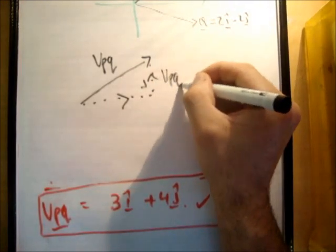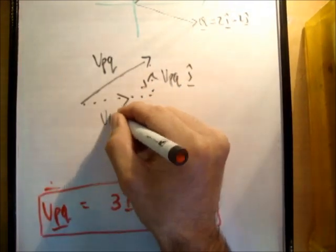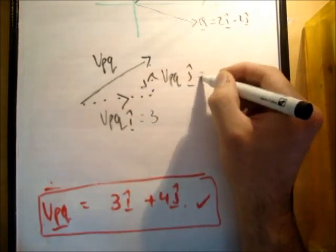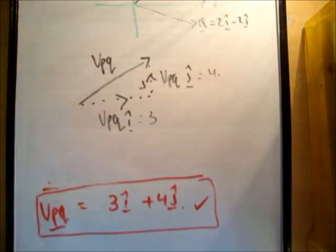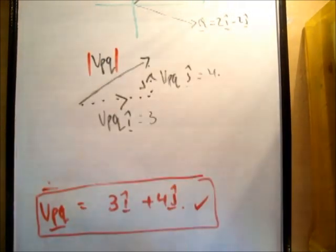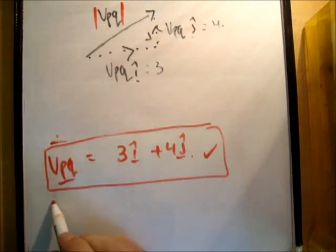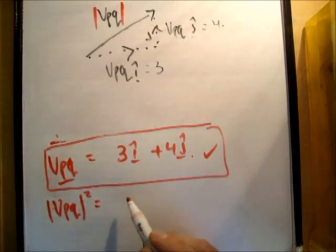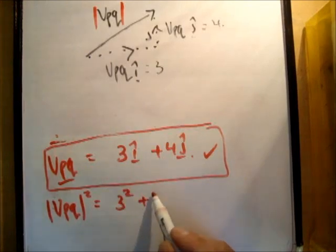So we need to resolve this in the I hat, J hat unit vector directions. So they'll have to be like this, and this is V, P, Q, J hat, this is V, P, Q, I hat. And this one is equal to 3, and this one is equal to 4. So in order to get the magnitude of the vector V, P, Q, we need to use a bit of Pythagoras. So the magnitude of V, P, Q squared is equal to 3 squared plus 4 squared.